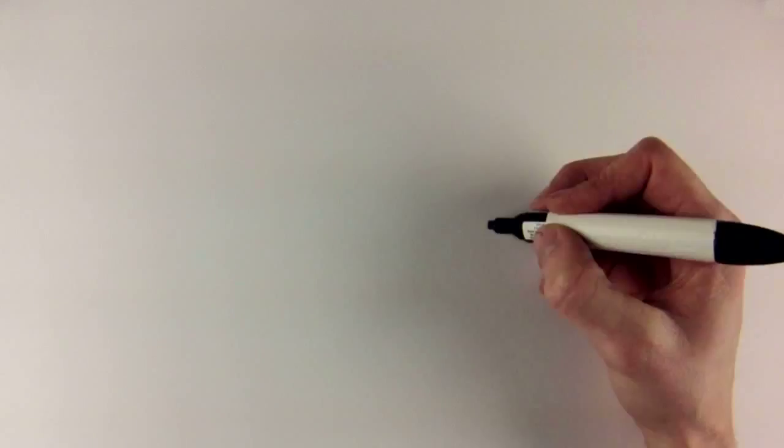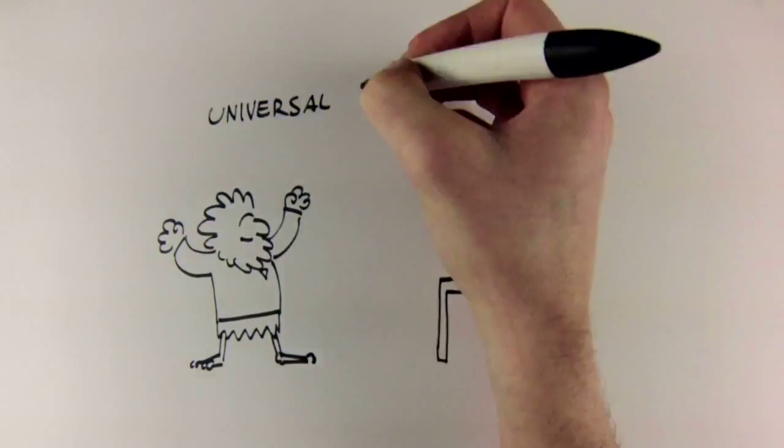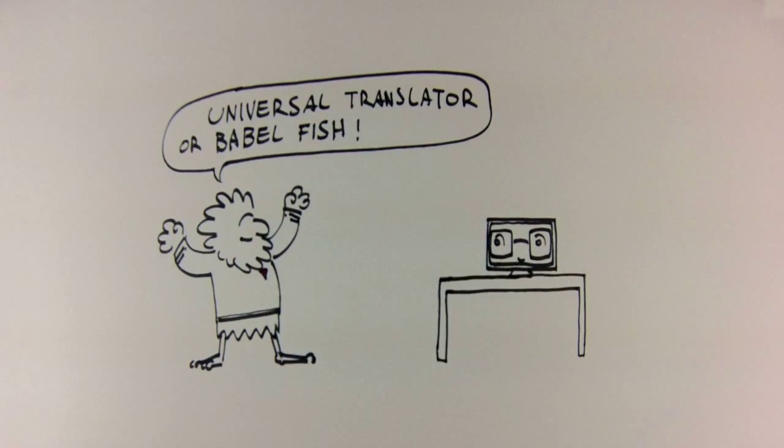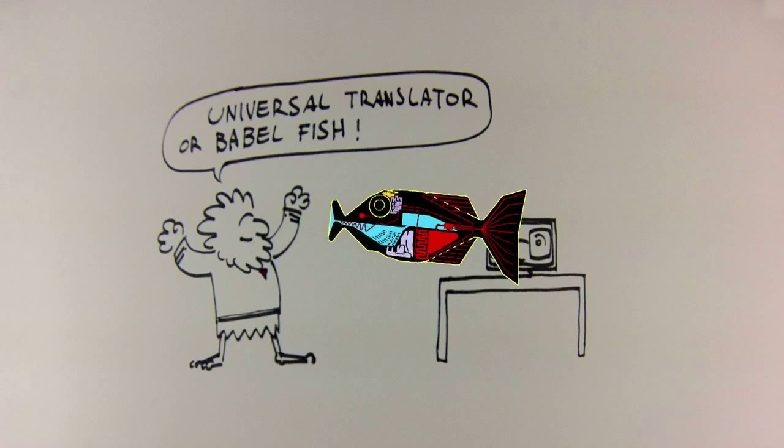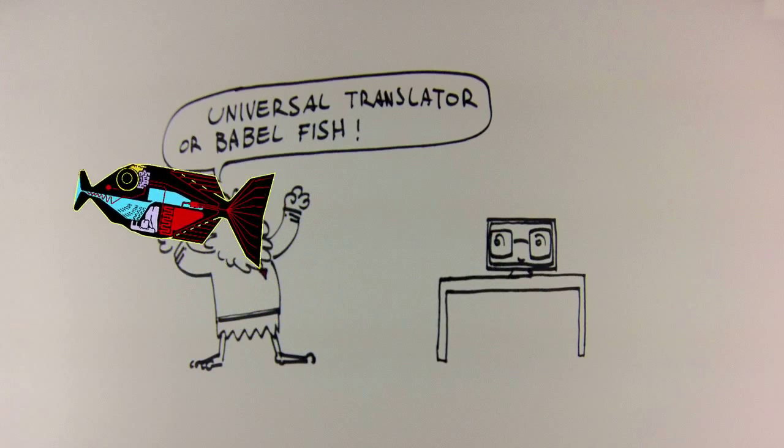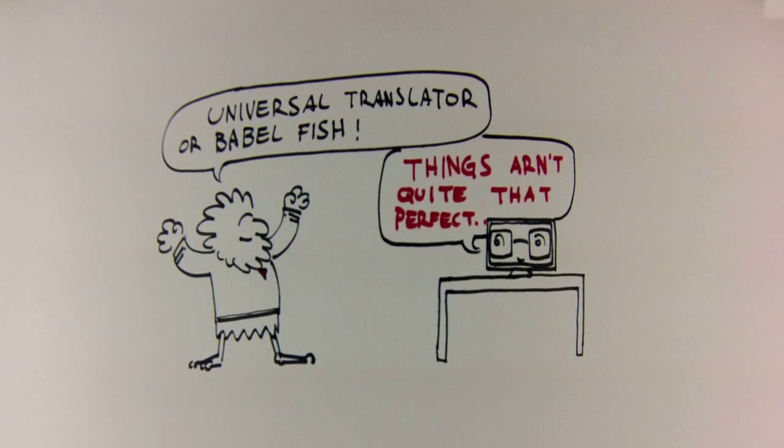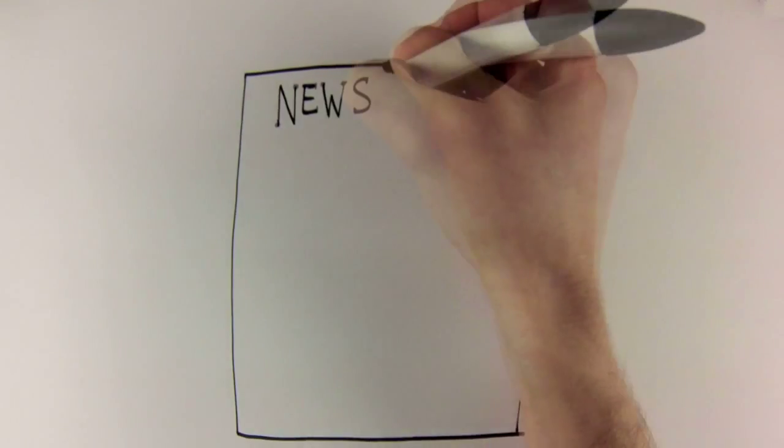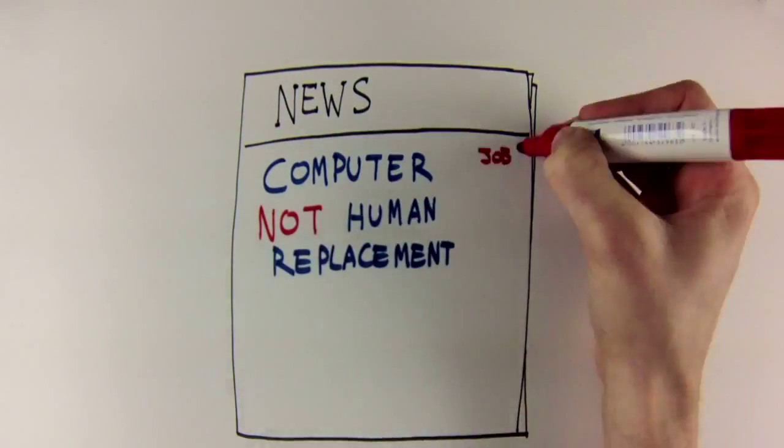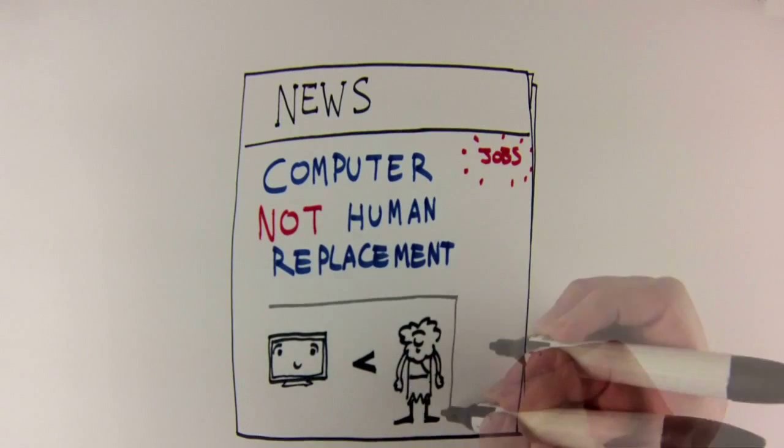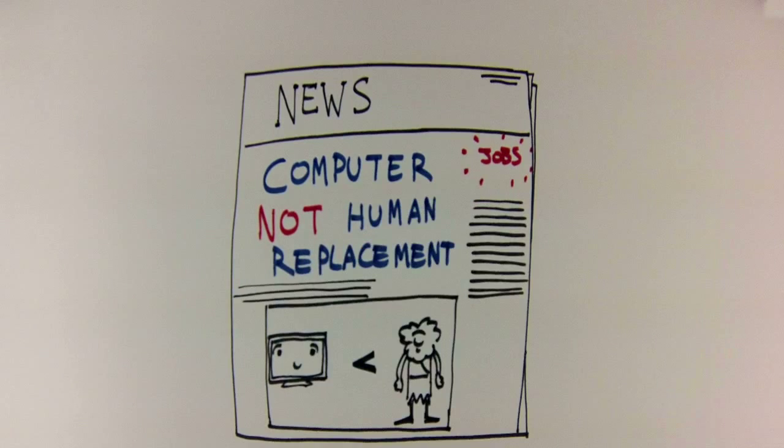Now, before you think we've got it all sewn up and that the universal translator from Star Trek or the Babelfish from Hitchhiker's Guide to the Galaxy are now a reality, it's important to know that as great as the output from machine translation is, things aren't quite that perfect. Machine translation tools like what we've been talking about are not a replacement for a human translator on an important job, but they are a very powerful tool to make their job easier, faster, and less expensive.